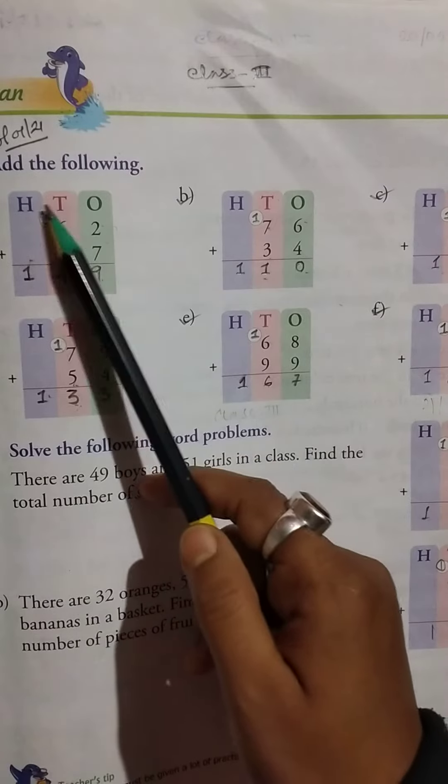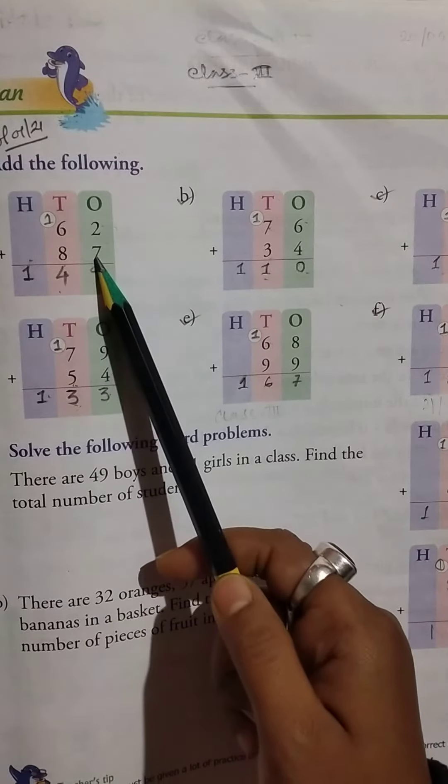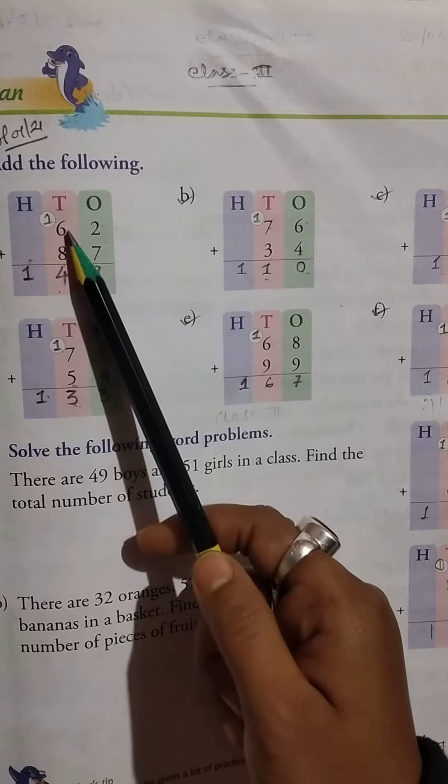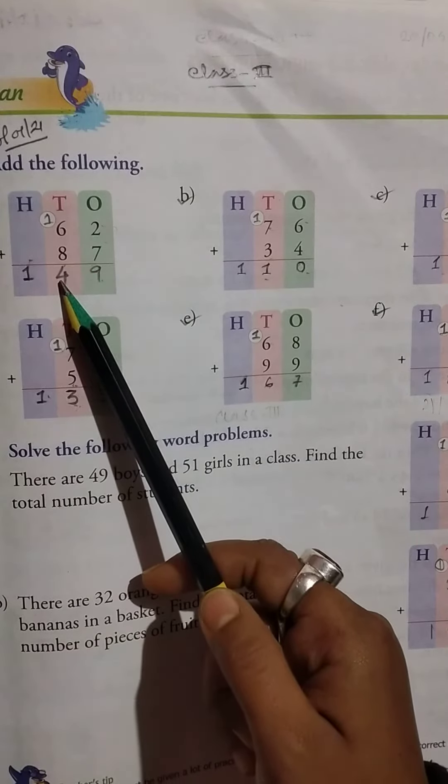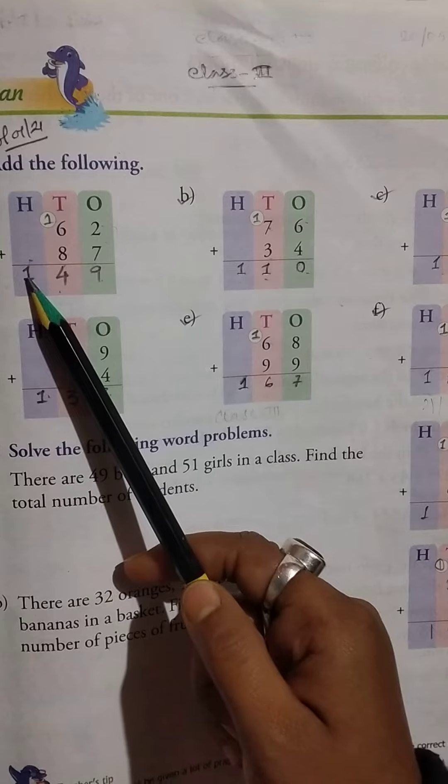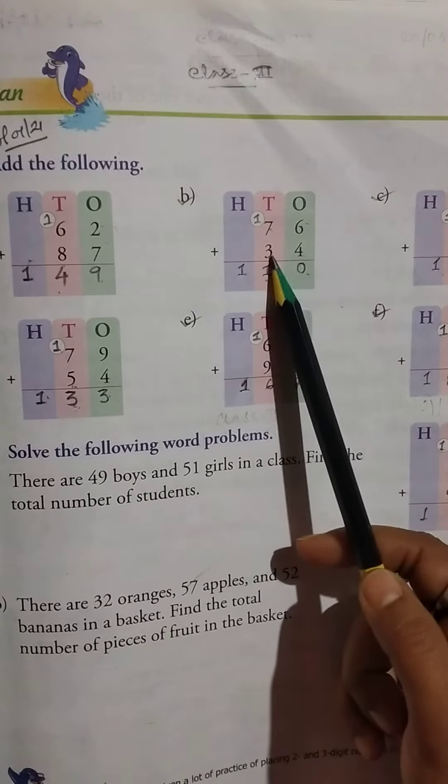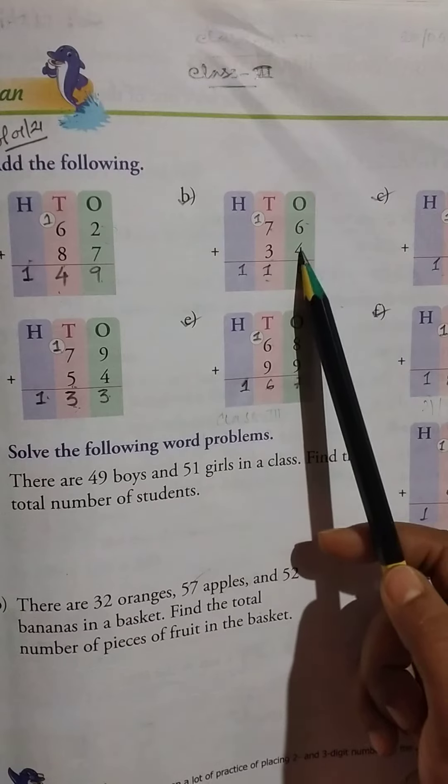Number one: 162 plus 87. Seven plus two equals nine. Eight plus six equals fourteen. Write four here and carry one here. So the answer is 149.